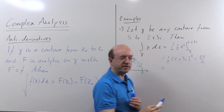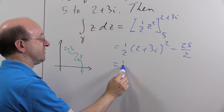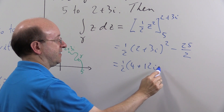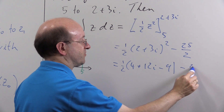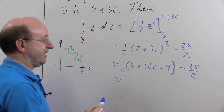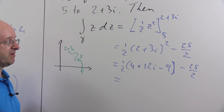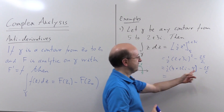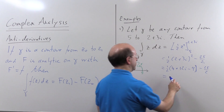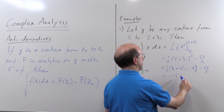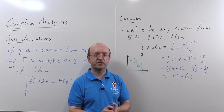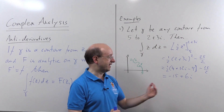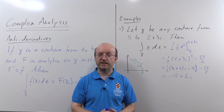So all we have to do is expand out (2+3i) squared. That's going to be 4 plus 12i minus 9, minus the 25 over 2. When we work all that out, we've got 4 minus 9 is minus 5, so that's minus 5 halves. Minus 5 halves minus 25 halves is going to be minus 15. And one half of 12i is just 6i. So we've got minus 15 plus 6i. The shape of the contour has been irrelevant — all that mattered is the endpoints, because we've got this antiderivative. If you go back to the previous video, you'll see that's exactly the answer I got in both cases.